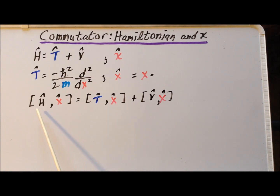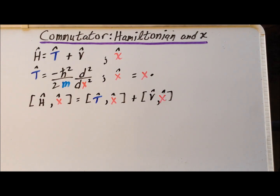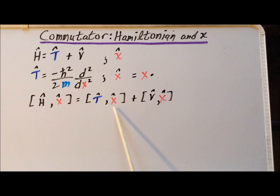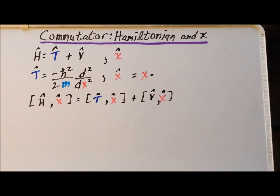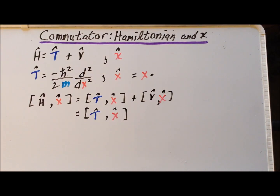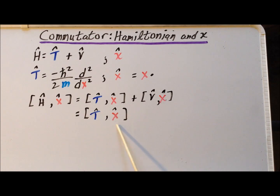We write the commutator of the Hamiltonian and x inside these brackets, then use a commutator identity. Since H equals T plus V, we can write this commutator as the commutator of T with x plus the commutator of V with x. The advantage of this is that the potential always commutes with the x position, so that commutator is zero. We have therefore simplified the problem to finding the commutator of T and x.